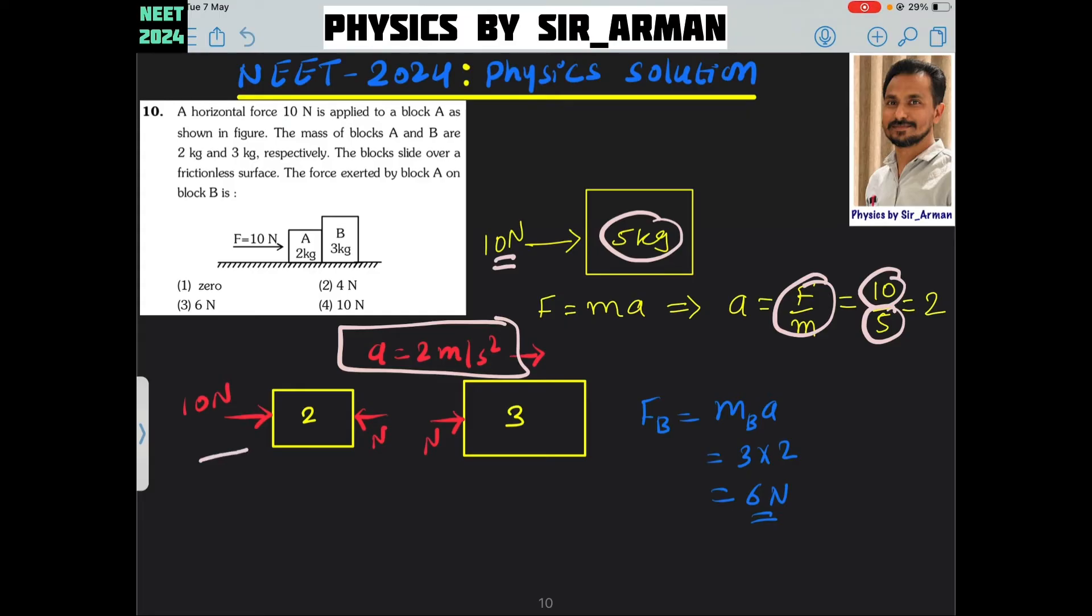When you apply 10 Newton force to the first block, it will accelerate and also produce acceleration in the second one. To produce acceleration of 2 meter per second square on the second block, the first block must apply some force on the second block, which is equal and opposite.